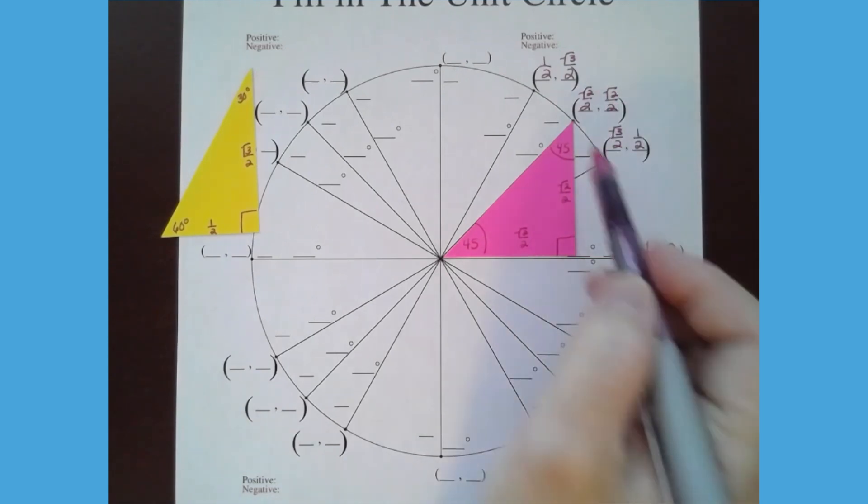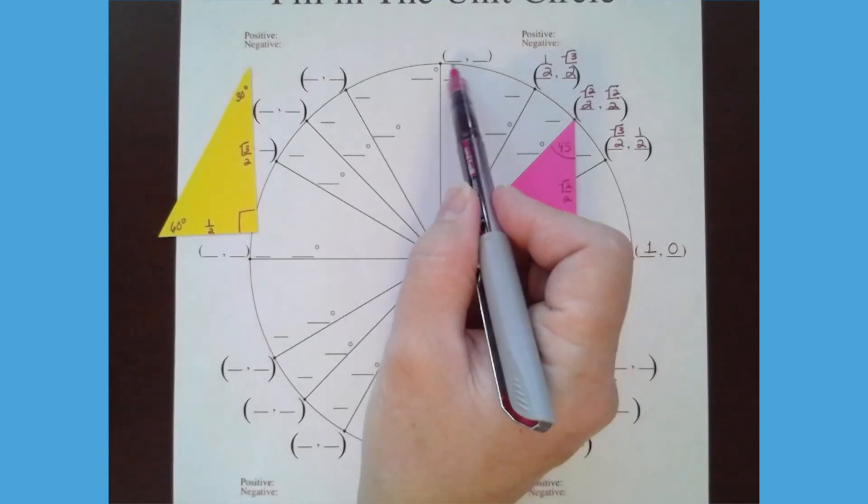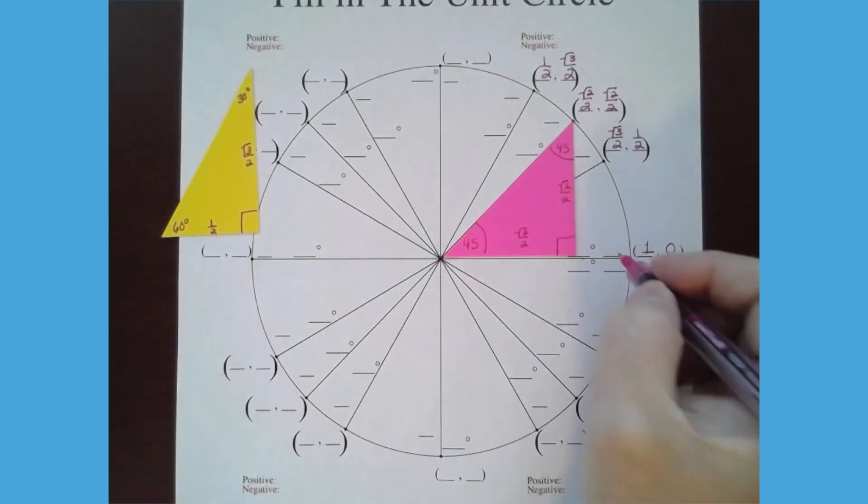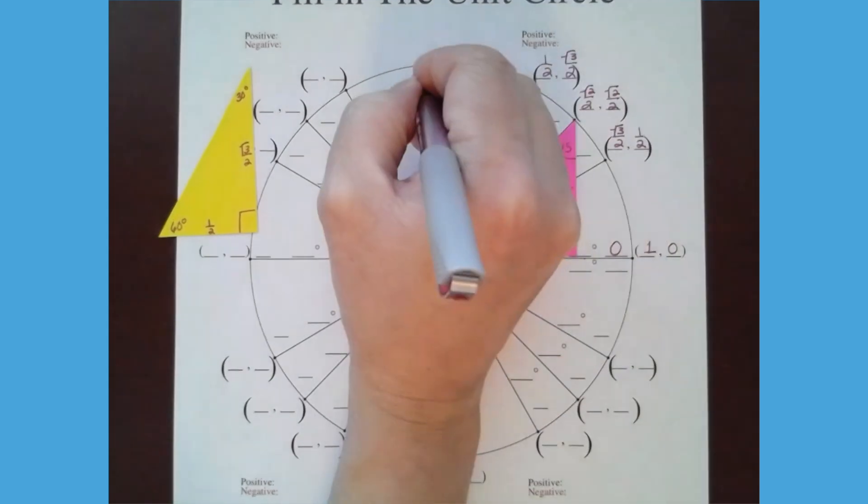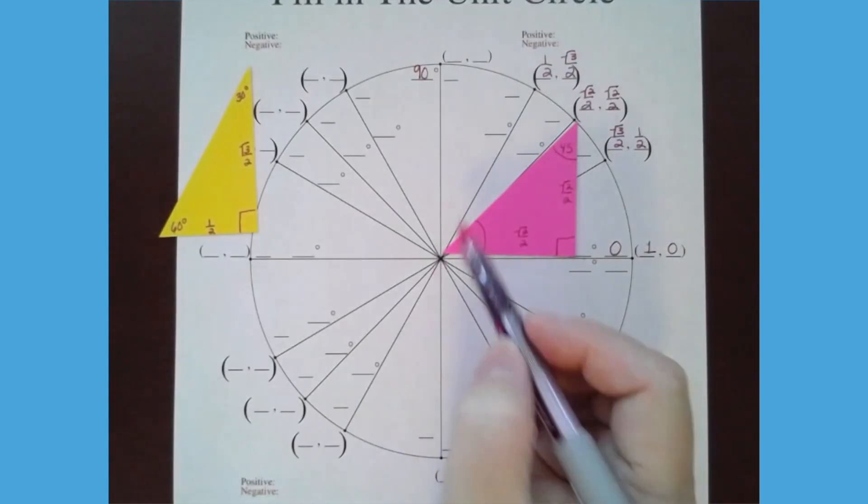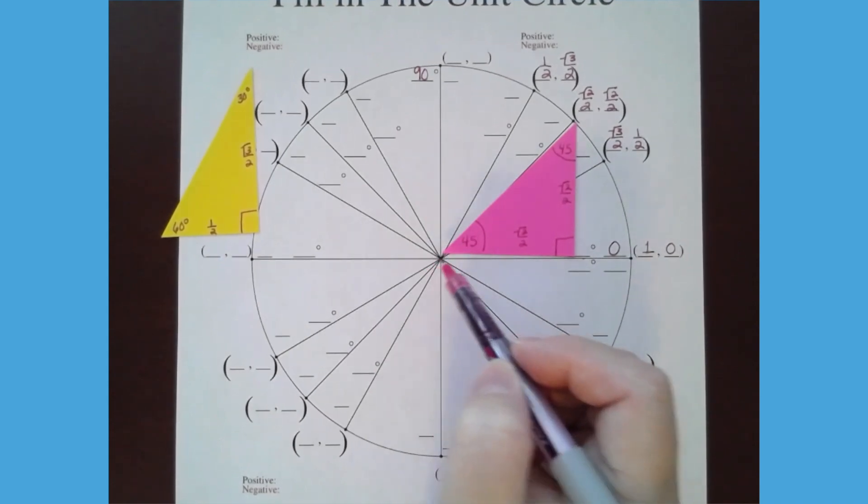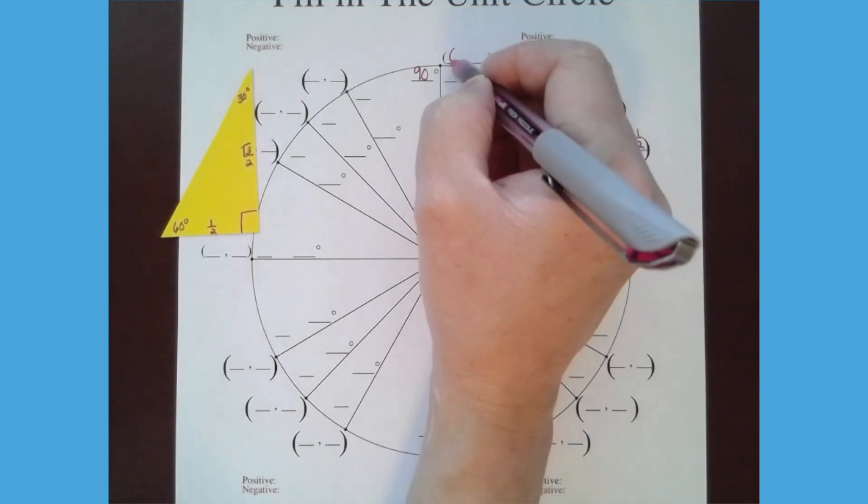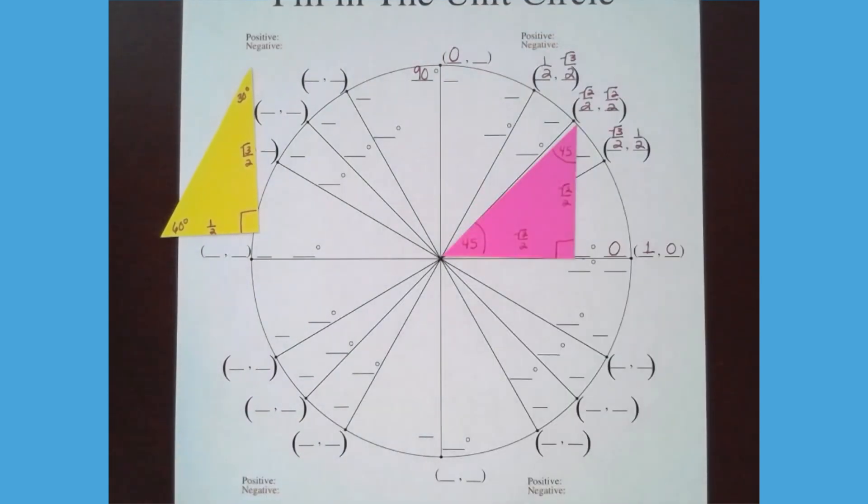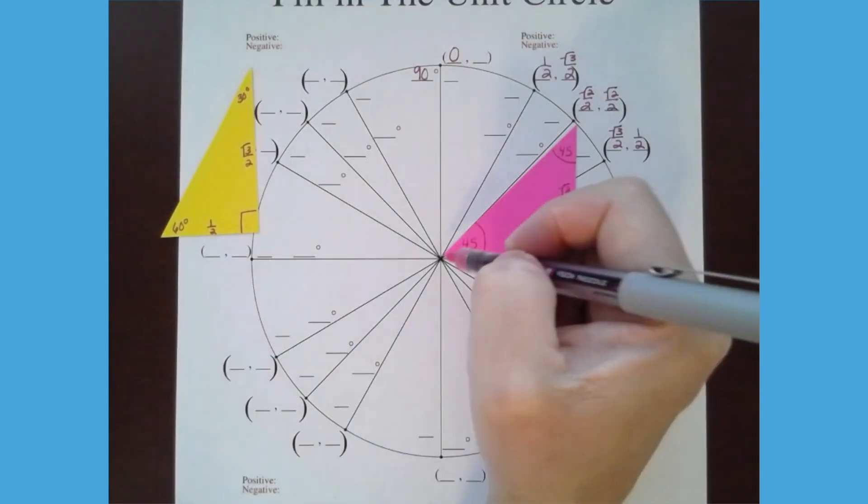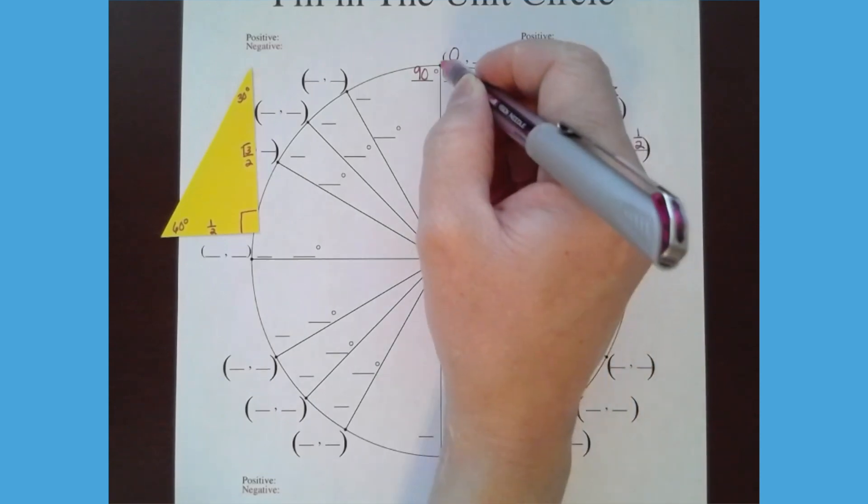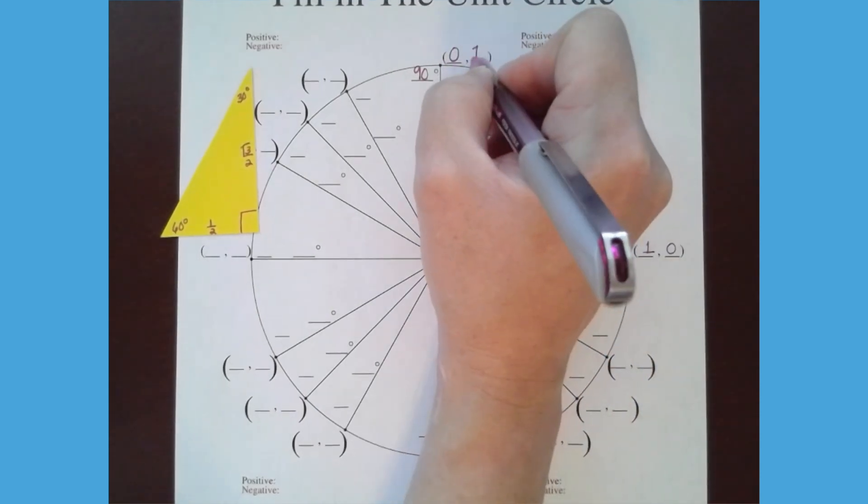And then we're going to finish the quadrant by talking about the 90 degree angle right here. And I'm going to write that angle in there. That's zero degrees. And this is 90 degrees. And we talked about that if you start from the middle of the circle, you do not go left or right. That means your x value is zero because x is a left and right movement. But you do go the radius up, and the radius is one. So that is a value of one.